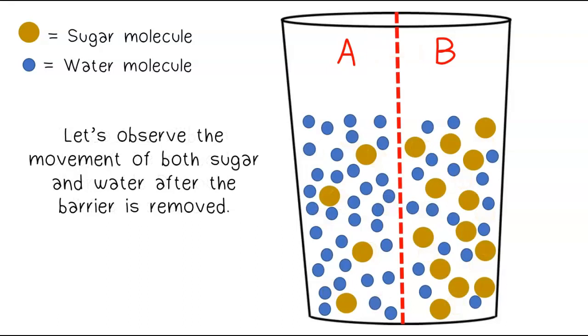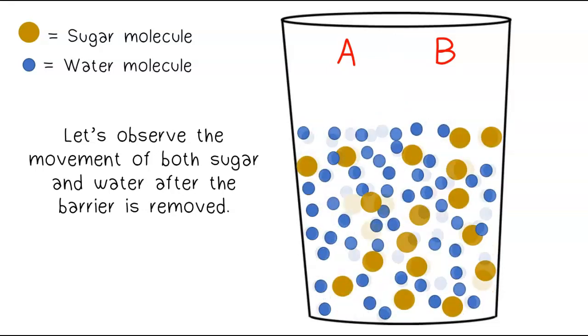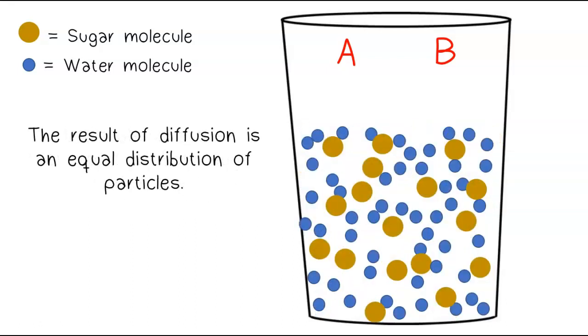Let's observe the movement of both sugar and water after the barrier is removed. The result of diffusion is an equal distribution of particles.